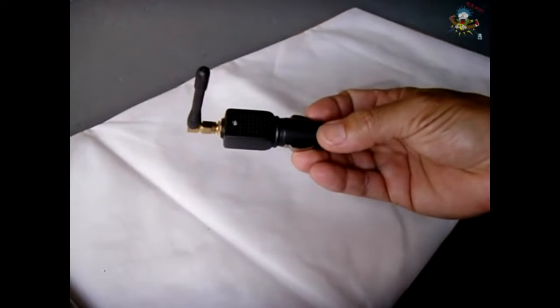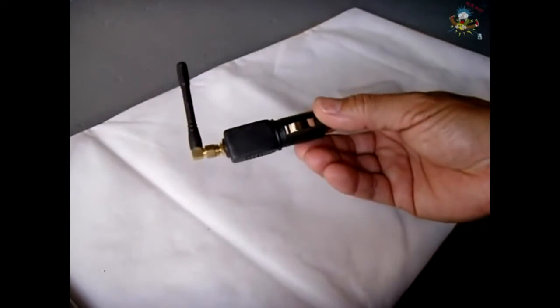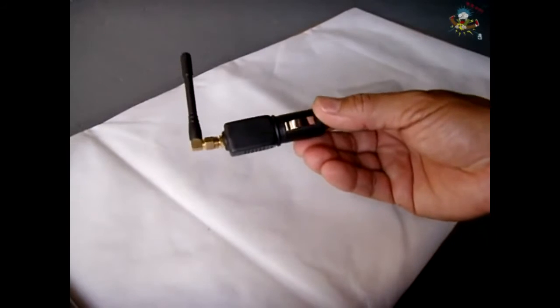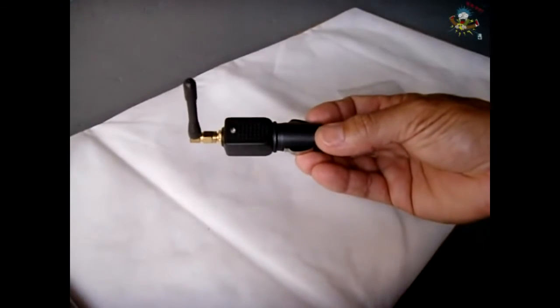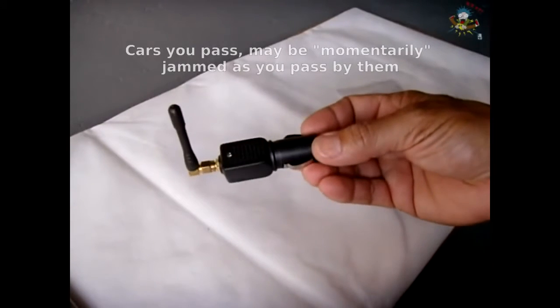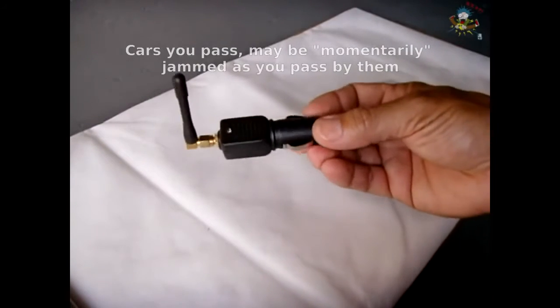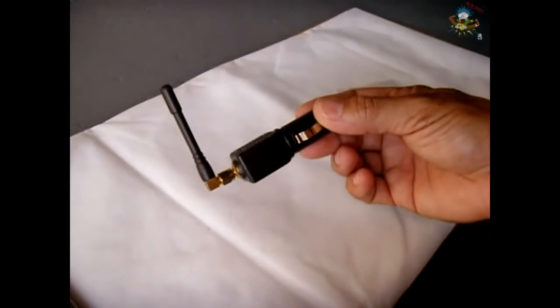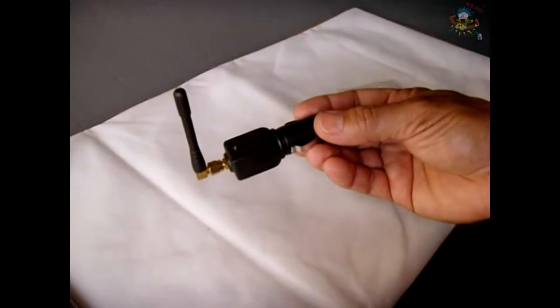Now because the jamming radius is only 15 to 20 feet, you should have little, if any, effect on others around you. So you don't have to worry about jamming other people unless you're parked next to somebody and you have this plugged in. If you're out and about moving around, the person would have to be following you to be jammed, and following you very closely. What I'm going to do now is plug this in and show you what the transmitted frequency is.